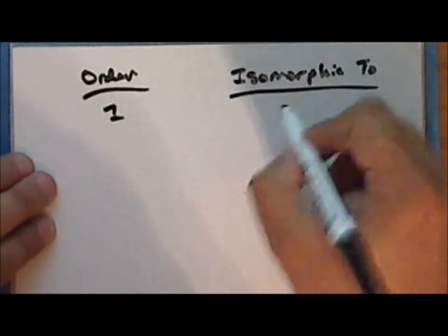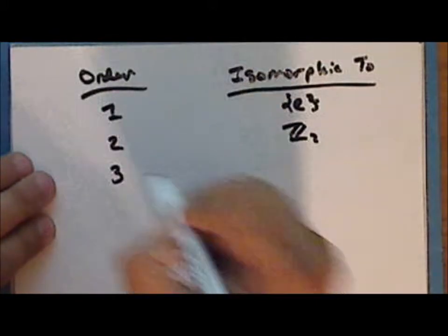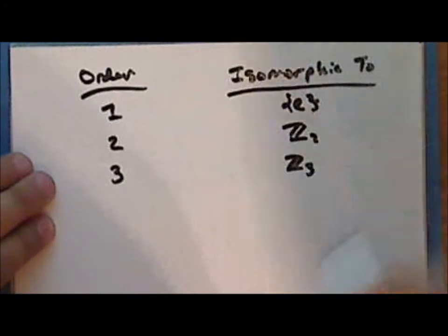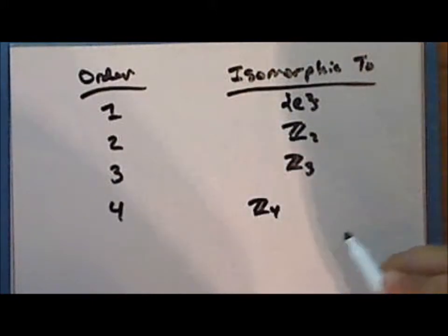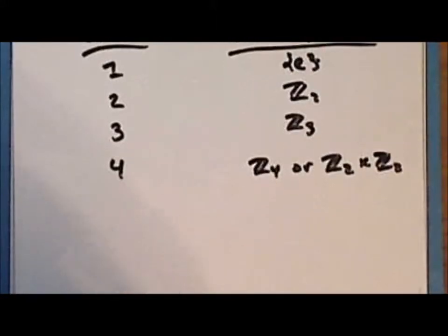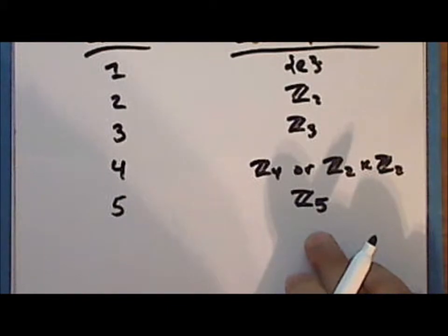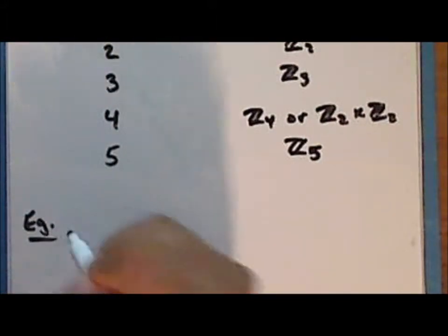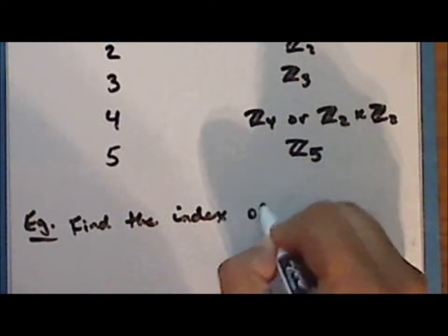So we have a complete description of finite groups up to order 5 and up to isomorphism: a group of order 1 is the trivial group; a group of order 2 is isomorphic to the integers modulo 2; a group of order 3 is isomorphic to the integers modulo 3; a group of order 4 is isomorphic to either the integers modulo 4 or the direct product of the integers modulo 2 with itself; and a group of order 5 is isomorphic to the integers modulo 5. Each of these groups is Abelian.